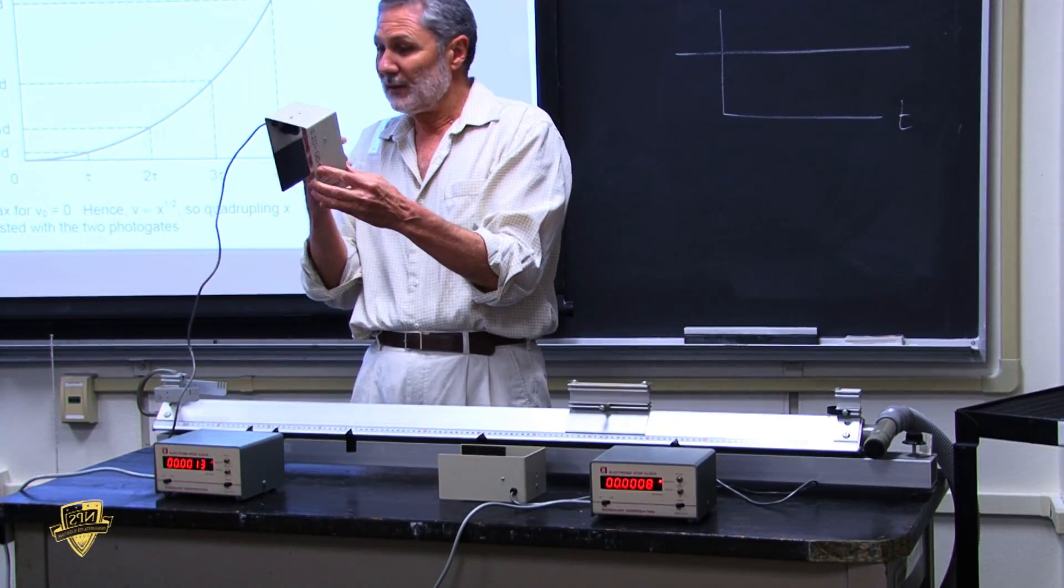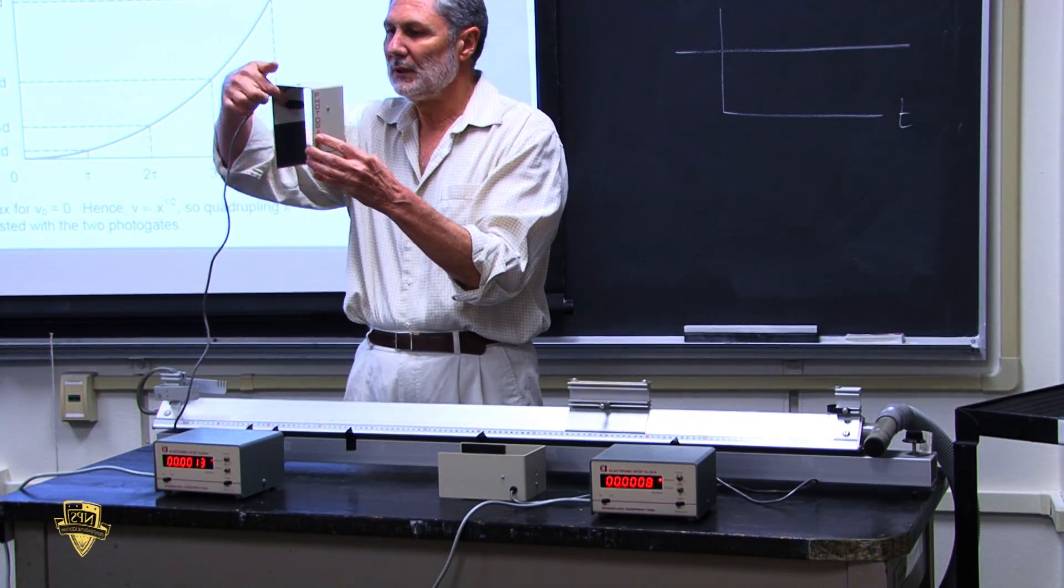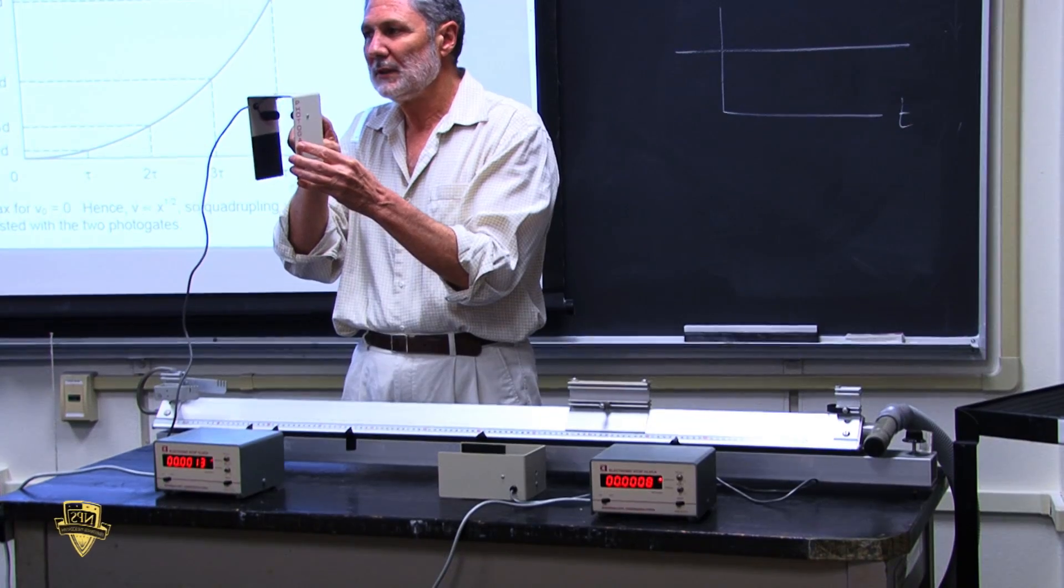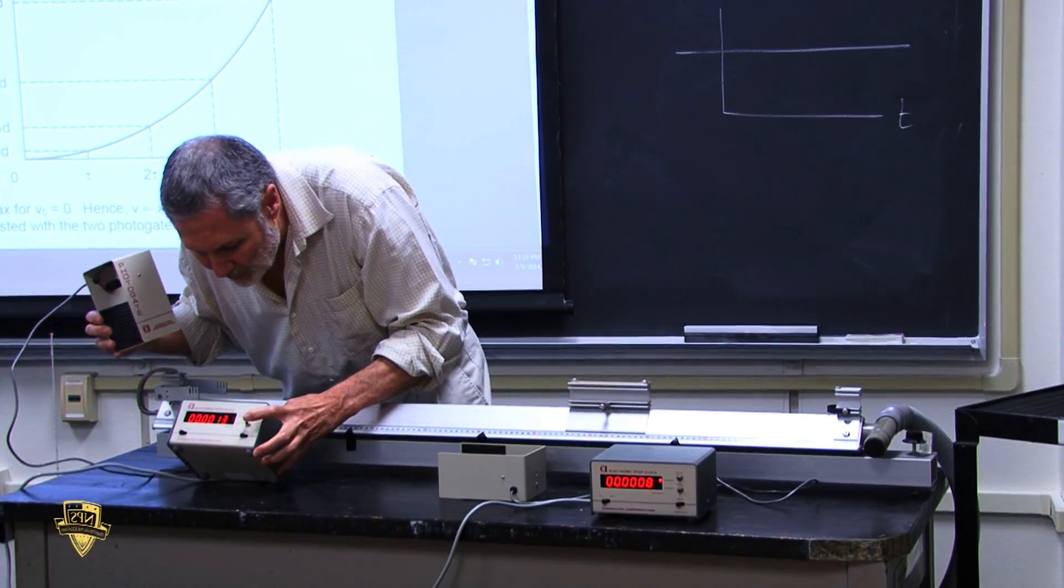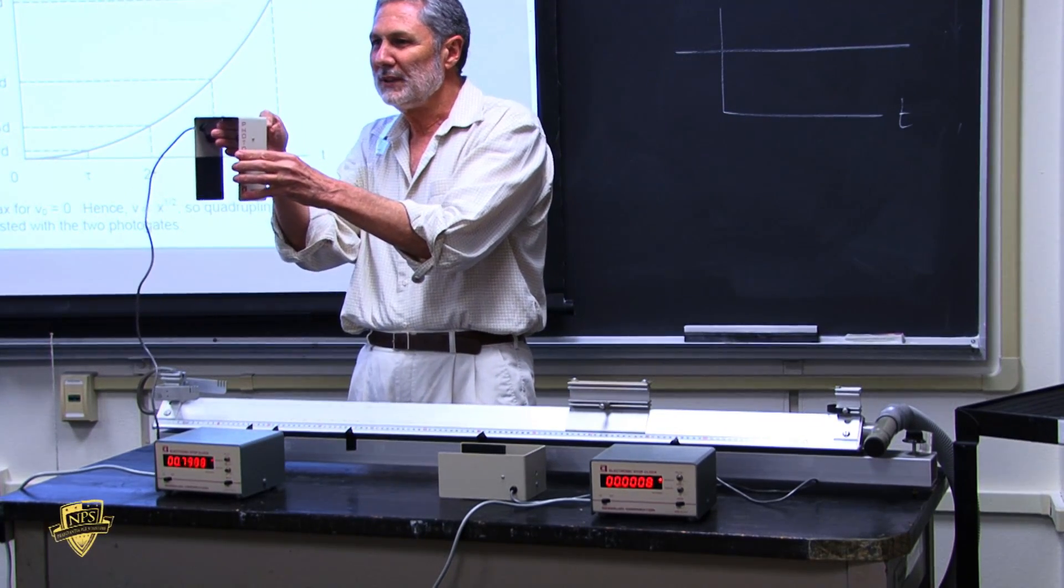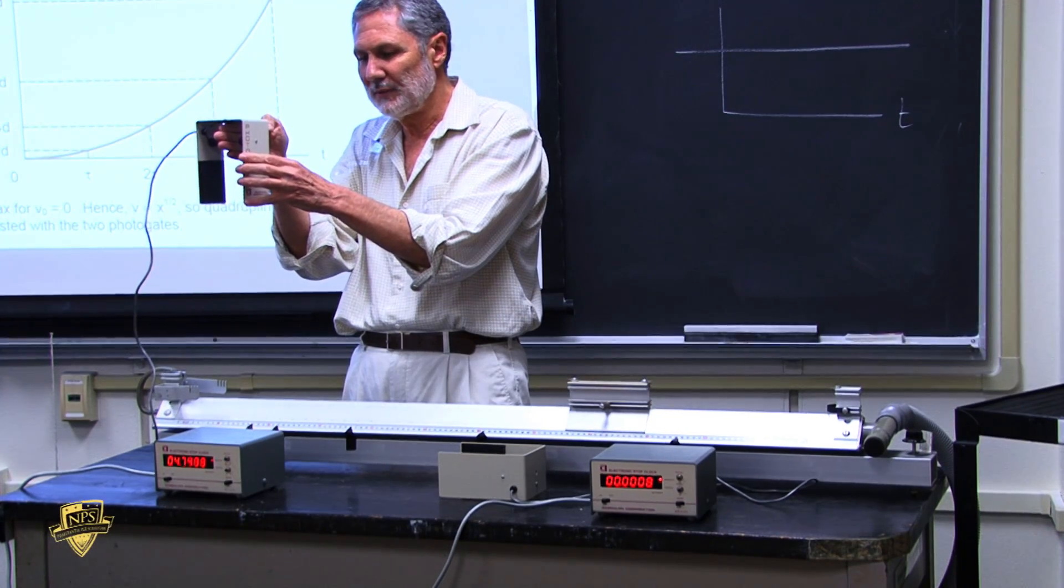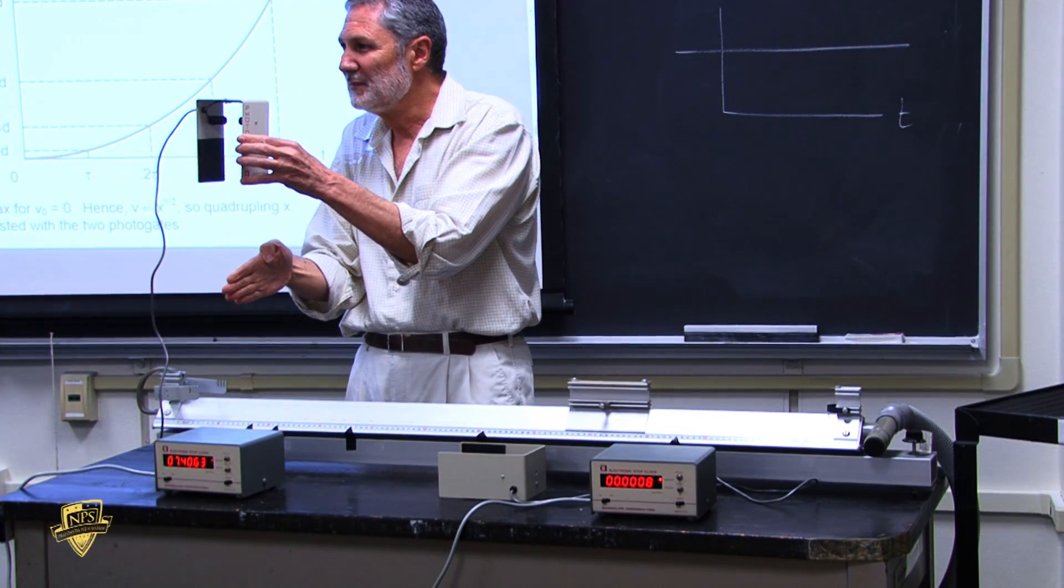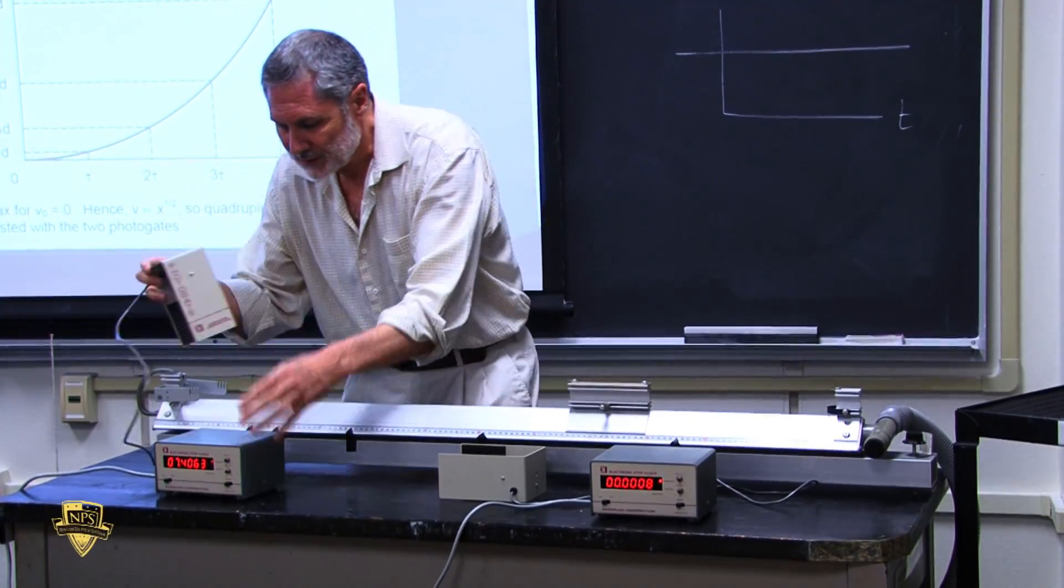One of these is an infrared light source. It sends out a beam to here where there's a photo cell that picks up the light. What this box does is when you interrupt the beam, it starts a timer. And when you restore the beam, it stops. So we can utilize this.